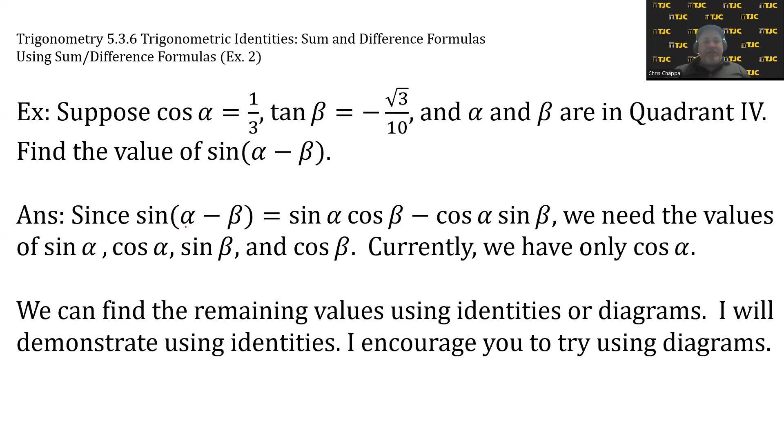Since sin(α - β) = sin α cos β - cos α sin β, we only need the values of sin α, cos α, sin β, and cos β. We currently only have cosine, which was given in the problem. We can find the remaining values using identities or diagrams. I'll demonstrate using identities first, then do the second one using diagrams.